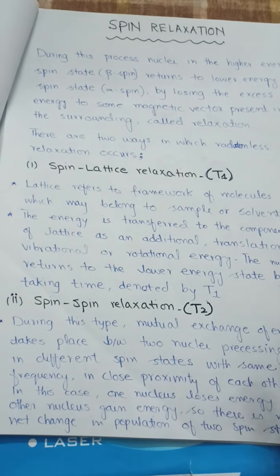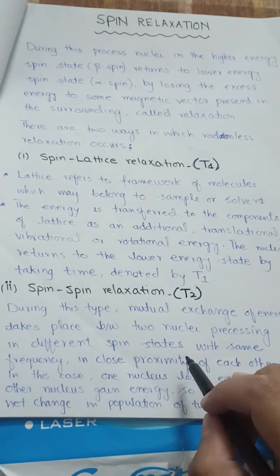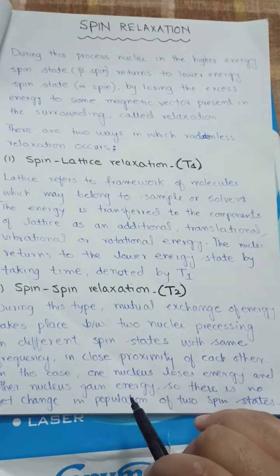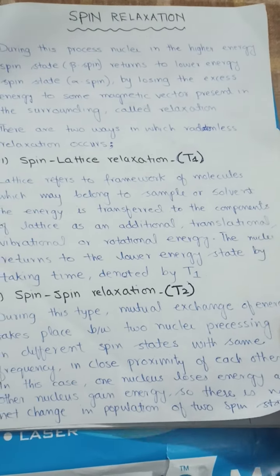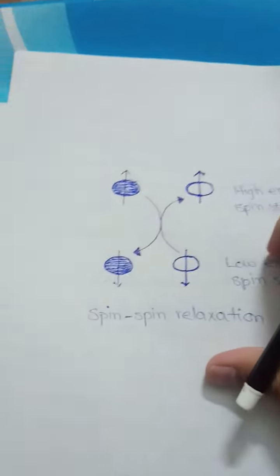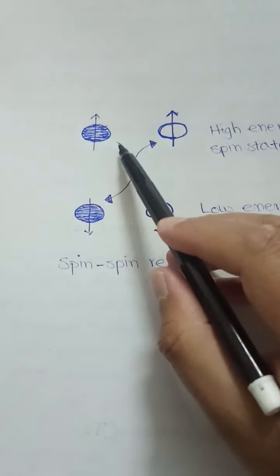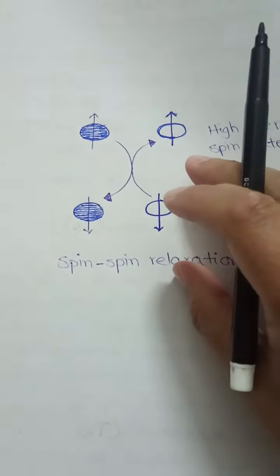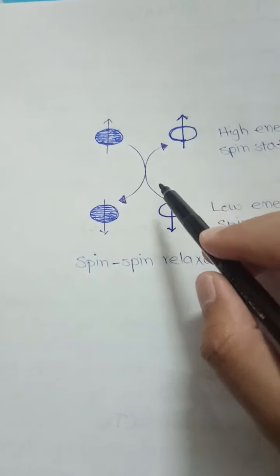In spin-spin relaxation, which is the second type, the mutual exchange of energy takes place between two nuclei precessing in different spin states with the same frequency, which are in close proximity to each other. One nucleus loses energy and the other gains energy, so there is no net change in the population of the two spin states, which is known as the Boltzmann distribution. In the diagram, the nuclei with a high energy spin state relax to the low energy spin state, exciting nearby nuclei to the higher energy spin state — this is spin-spin relaxation.